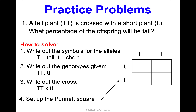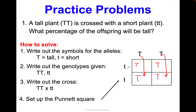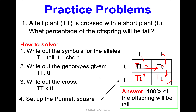Let's practice. A tall plant (capital T, capital T) is crossed with a short plant (lowercase t, lowercase t). What percentage of the offspring will be tall? Capital T is tall — dominant. Lowercase t is short — recessive. Write out the genotypes, set up the Punnett square: the tall plant provides capital T down, the short plant provides lowercase t across. Every box gets capital T lowercase t. Answer: 100% of the offspring will be tall.